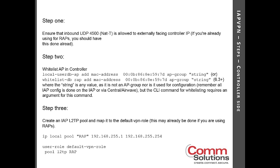To set up an IAP VPN there are two sides to the connection: the IAP side at the branch location, and the controller side. The first step is to make sure that inbound UDP 4500 can come across the internet and reach the controller at its externally facing IP — either a NATed public address or a native public address. If you're currently using RAPs, this should already be done.